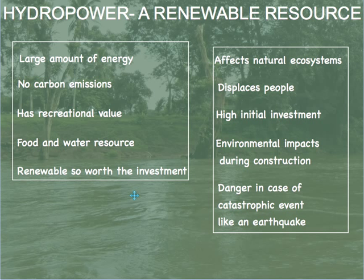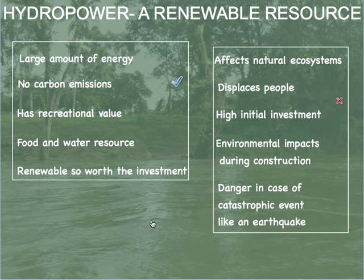Hydropower, which is a renewable resource, does not come without its disadvantages. While Brazil makes good use of its advantages, some disadvantages include the effect on natural ecosystems, as the damming of rivers affects both aquatic and terrestrial environments. Millions of people are displaced when dams are created. There is a need for high initial investment to construct a mega dam, and there are many environmental impacts during the construction of these huge structures. Added to all of that, there is the looming danger of a catastrophic event like an earthquake triggering a flood.